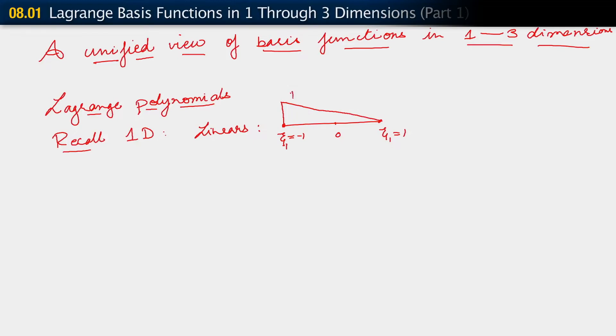In this setting, we know very well what our linear functions are. This is N1 and we have N2. They satisfy the usual properties and the fact that they evaluate to 1 when added up at any point C1 in the domain. These are linears, and they were written as N1 of C1 equals 1 minus C1 over 2, and N2 of C1 equals 1 plus C1 over 2.